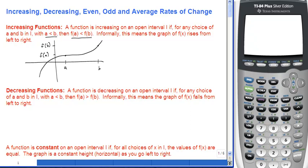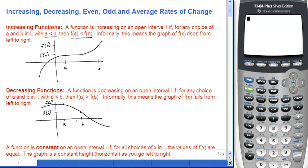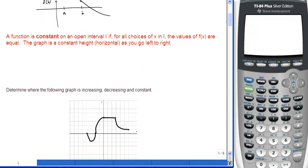For a decreasing function, the graph falls. If you imagine points a and b with heights f(a) and f(b), even though a is smaller than b, f(a) is bigger than f(b). So f(a) is greater than f(b) when a is less than b — the graph starts higher and ends lower. A function is considered constant if all y-values are equal across the interval, which looks like a horizontal line from left to right.